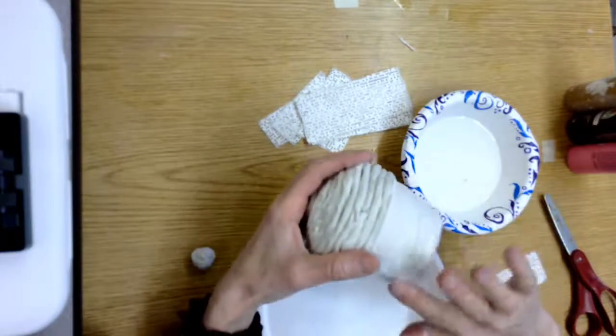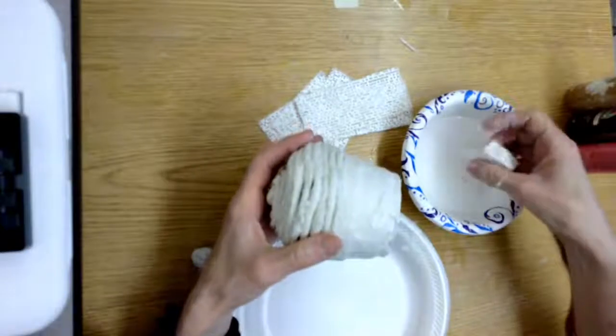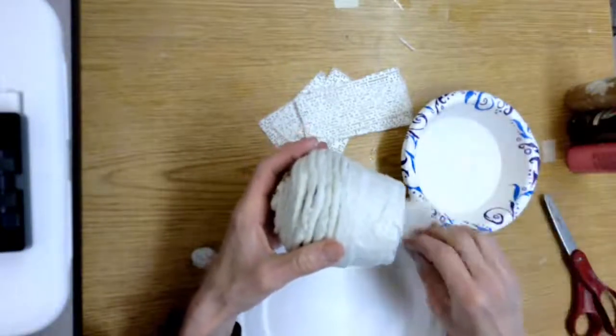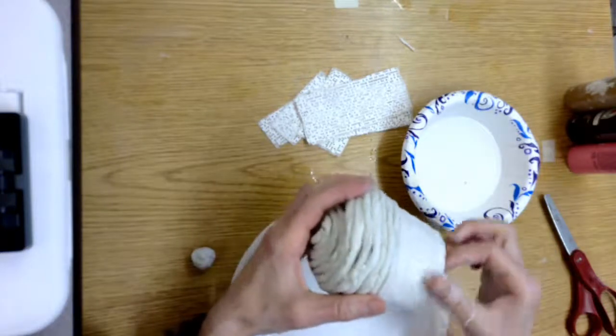Now it will probably take about 15 minutes for this plaster to dry so that you could move it and it wouldn't break, but you should wait overnight before you paint it just to make sure it's completely dry.